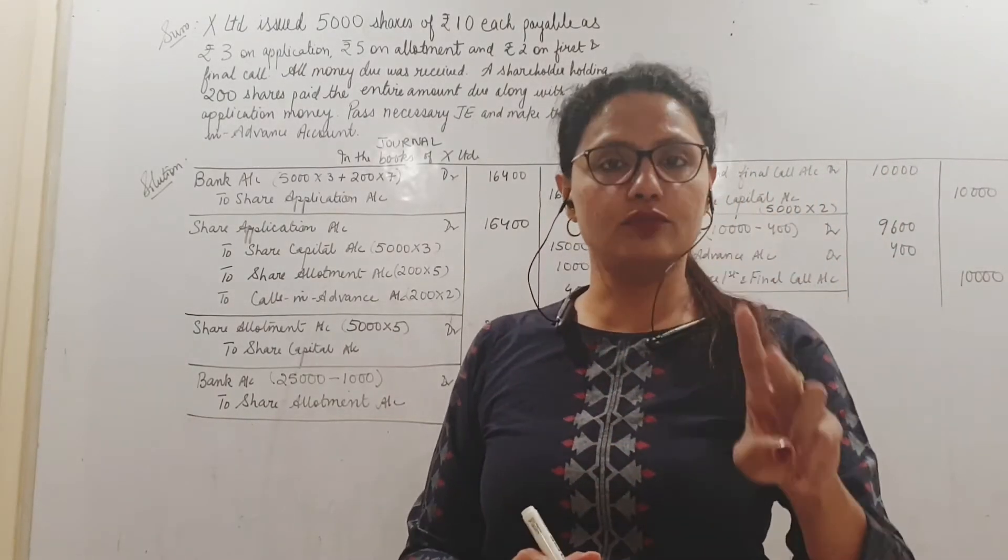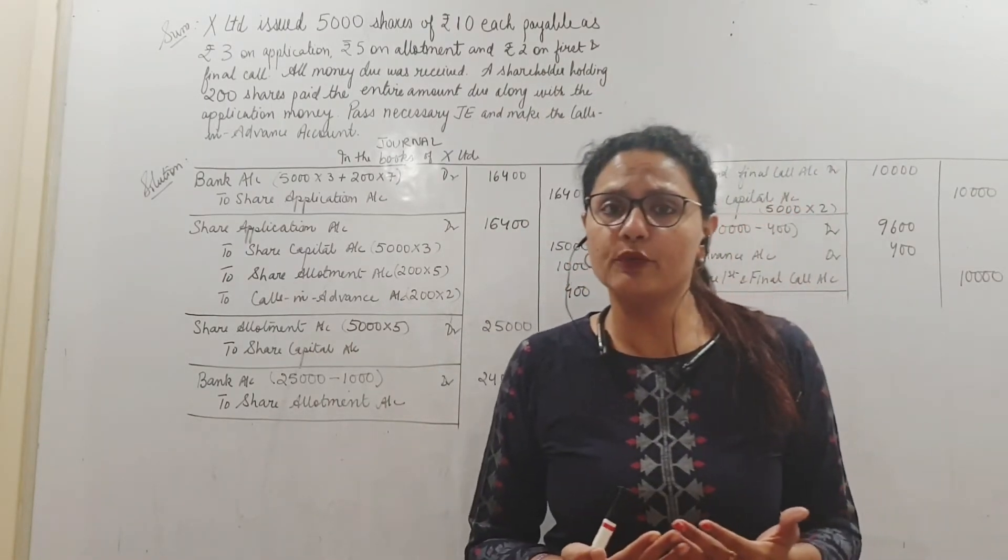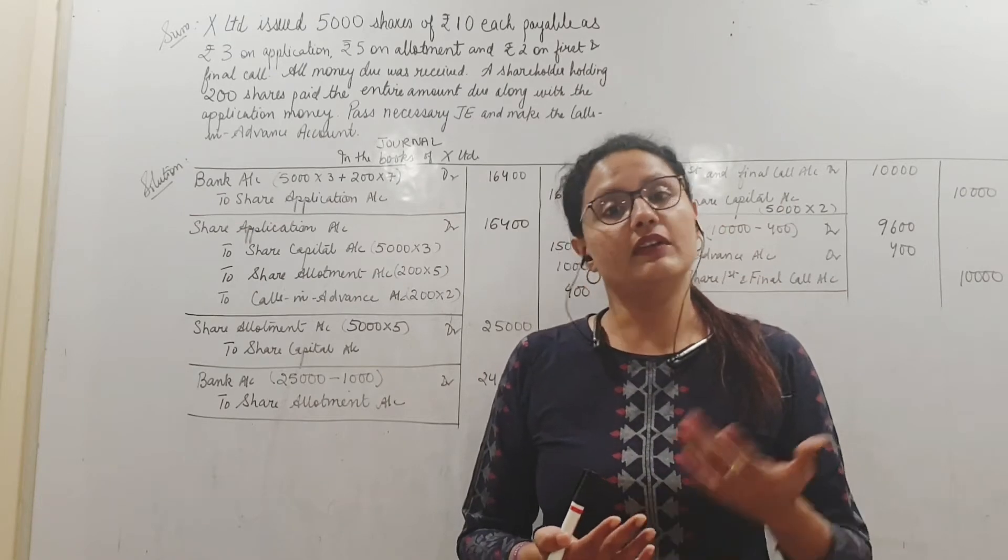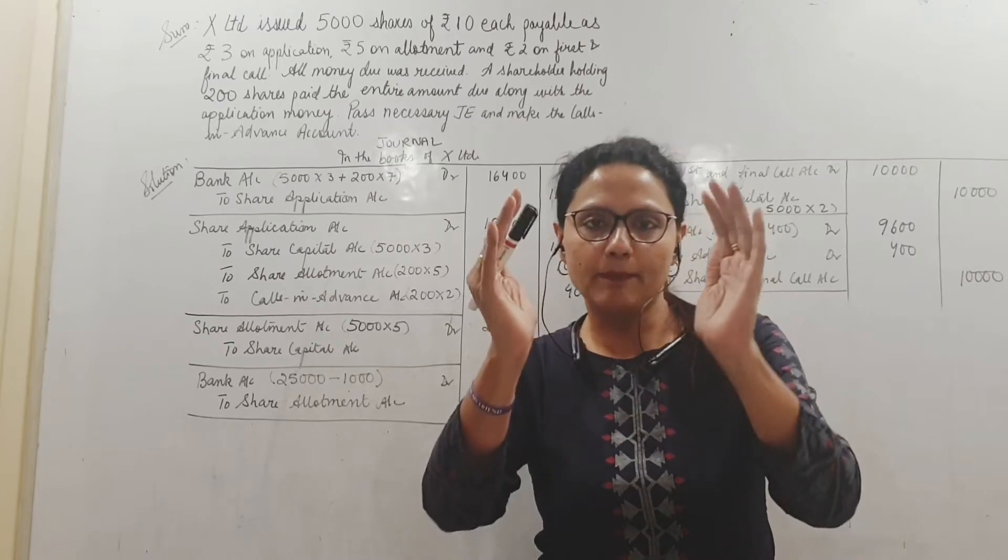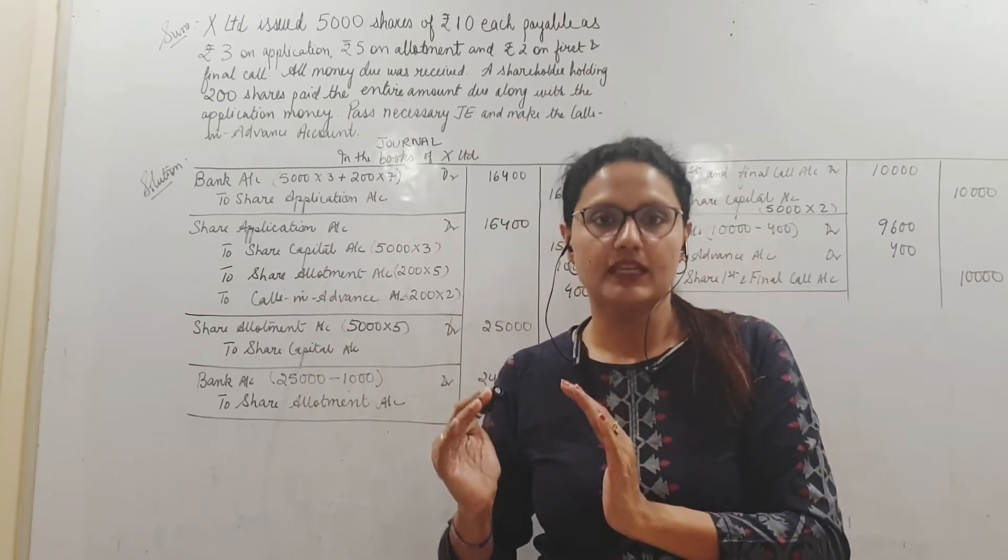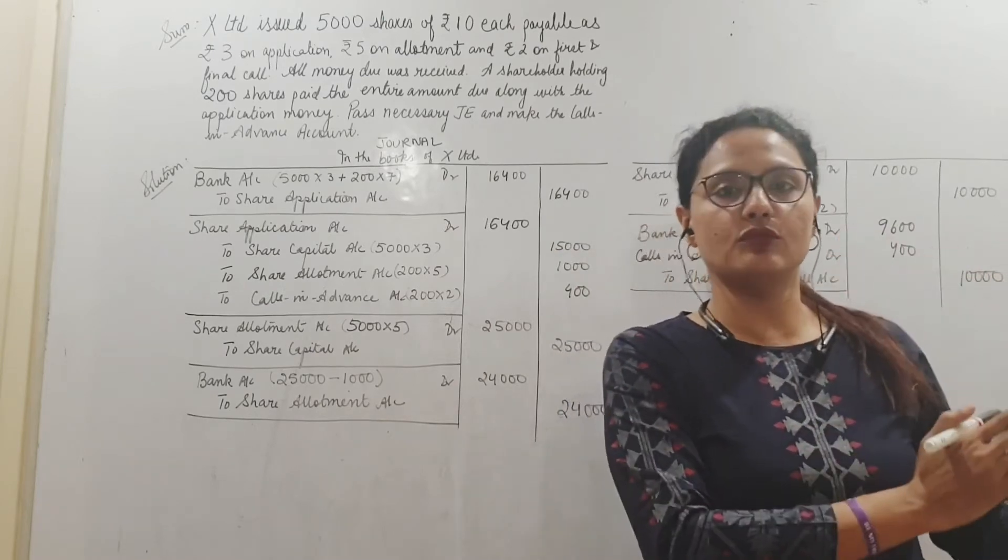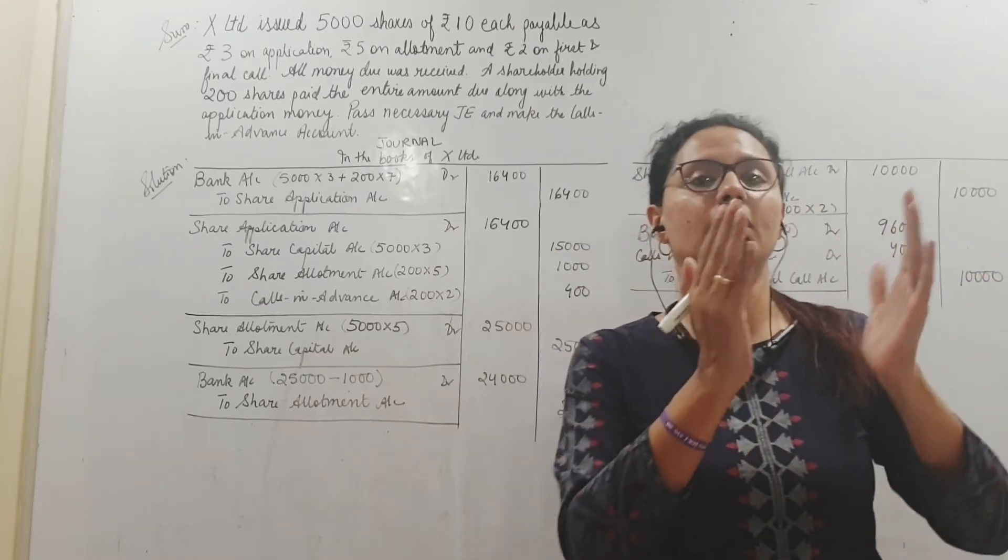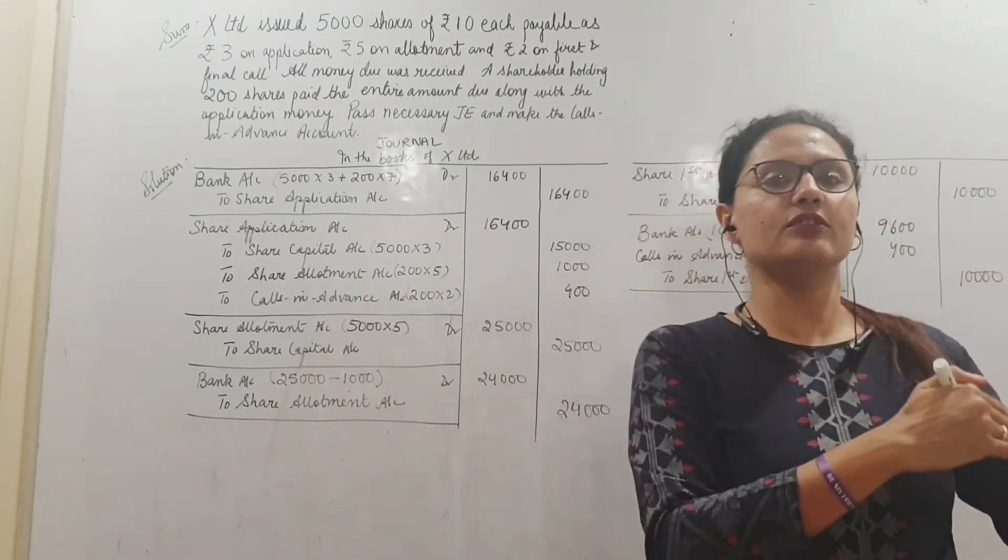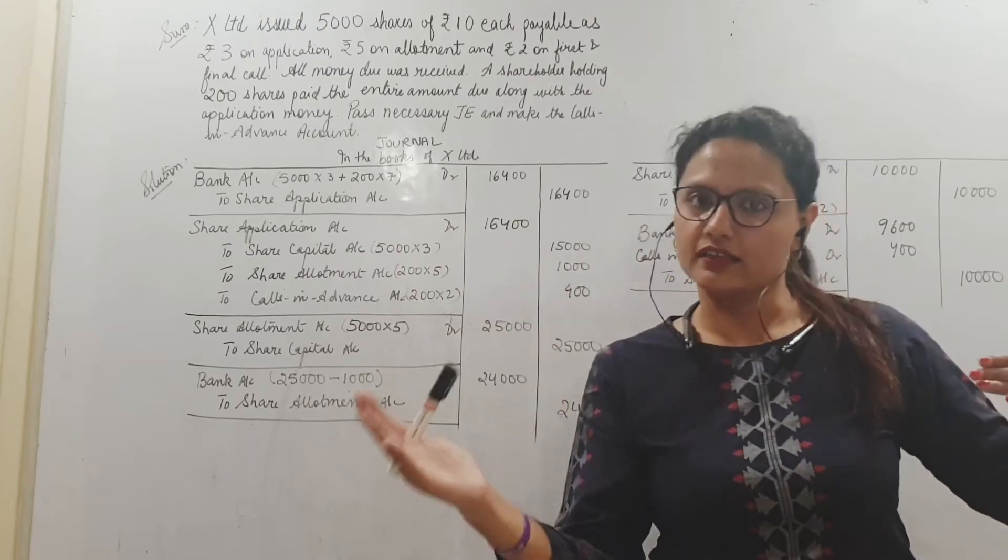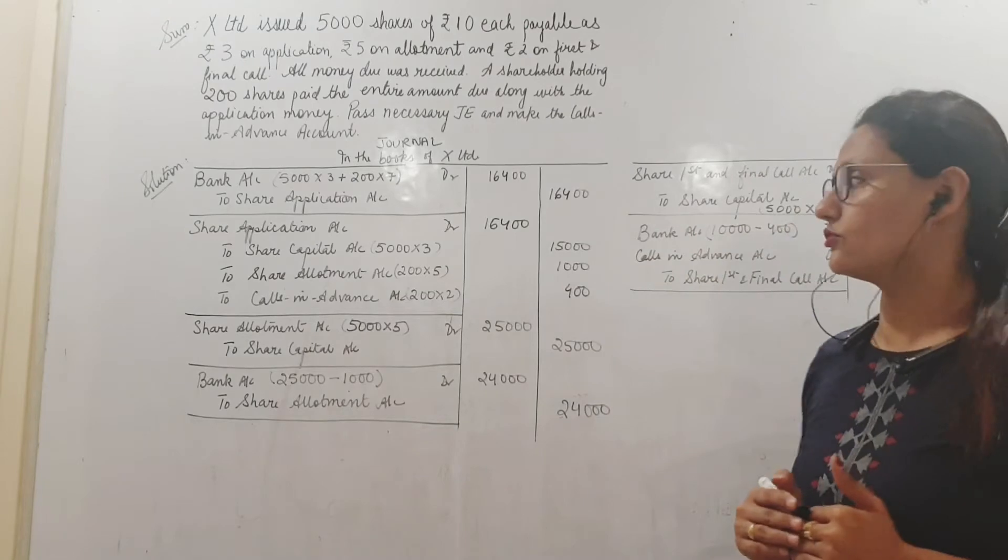You have to understand this. This shareholder holding 200 shares has already paid me the entire amount in advance. Will he again pay me at the time of allotment? No. Will he pay me at the time of share call? No. He's already paid me the amount. So this money I have taken and kept. This I will have to adjust as and when this amount is due. So let us see how do we do the adjustments in the next installments.